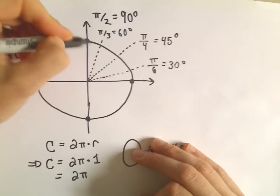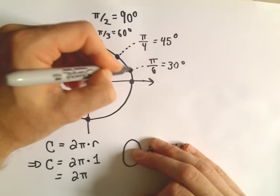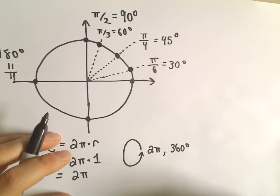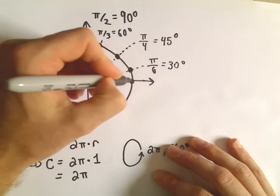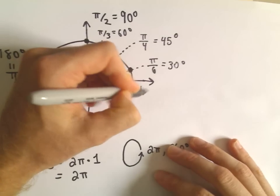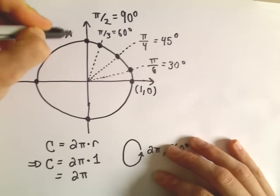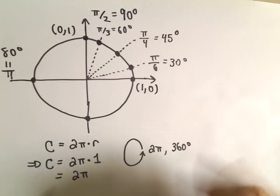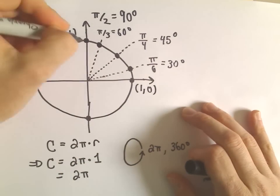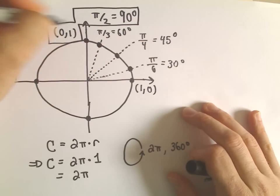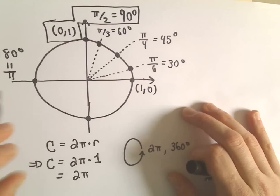I want to talk about the points on the circle and figure out those coordinates. Since this is a circle of radius 1, if we go all the way over, that's just going to be the point (1, 0). If we're at the top, that's simply going to be the point (0, 1). The point (0, 1) corresponds to π over 2, or 90 degrees.